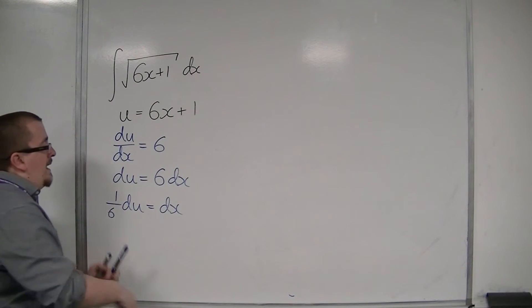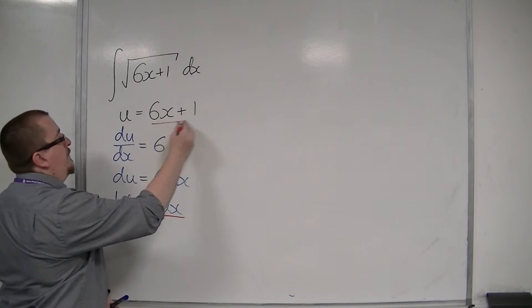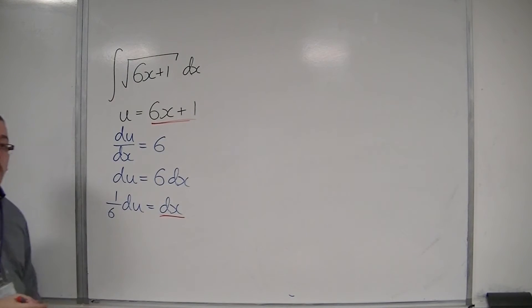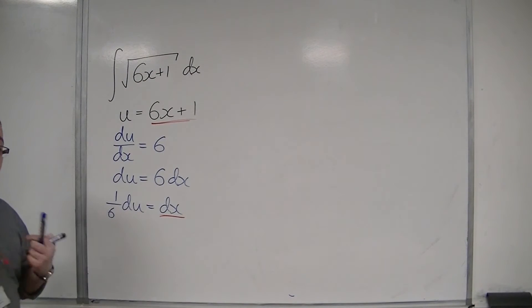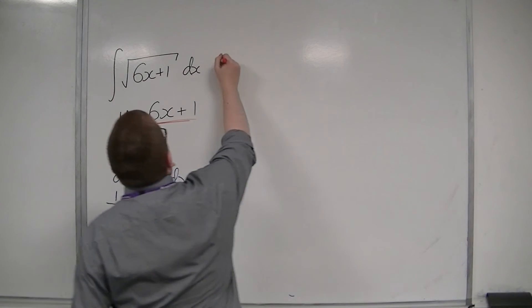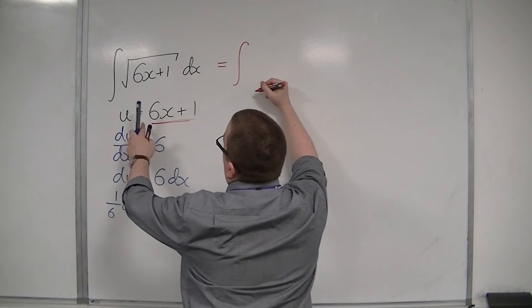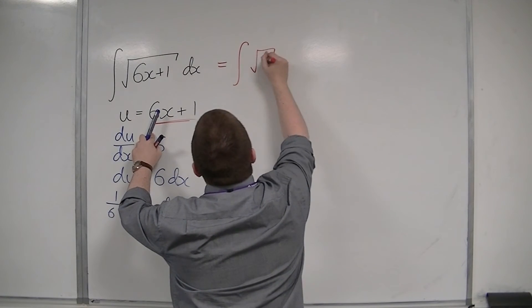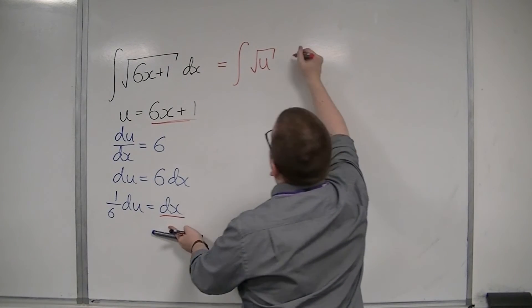Then, that means that I have a replacement for dx and I have a replacement for 6x plus 1. They're the bits that are causing me the issue. And so, I'm now ready to substitute these pieces into the integral.